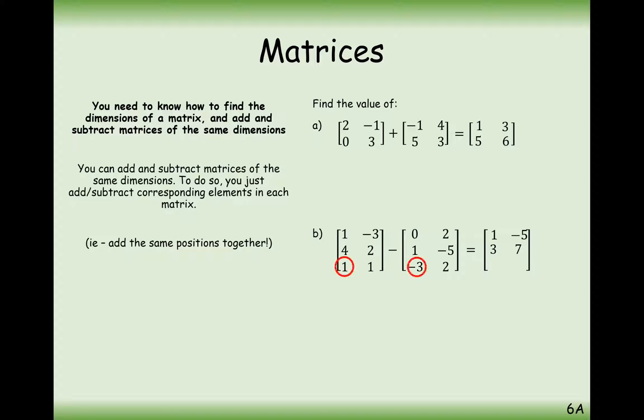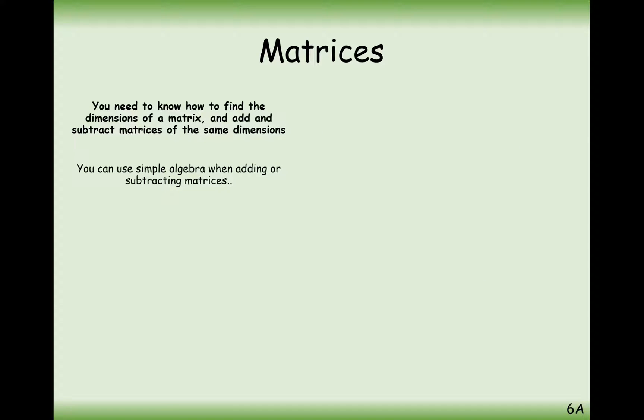The bottom left-hand cells, that's 1 minus minus 3, that's 4. And the bottom right-hand cells, that's 1 minus 2, which is minus 1. So it's just as straightforward as that. Now multiplication, when we get onto it, is going to be a lot more difficult. Addition and subtraction are effectively the two easy operations.